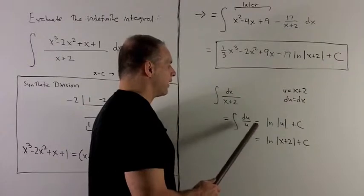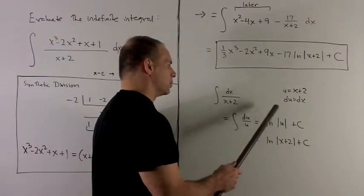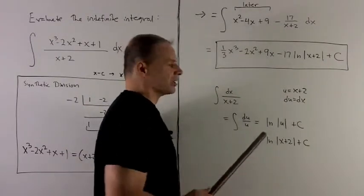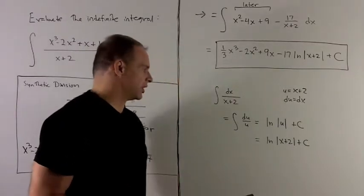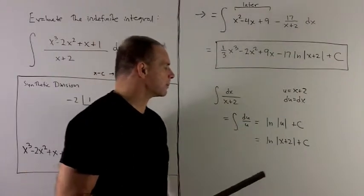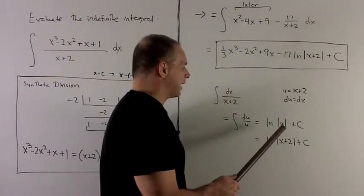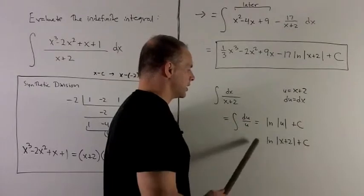When I take the antiderivative, I get natural log of absolute value of u plus a constant. Don't forget your absolute value of u. Depends on how persnickety your professor is. I substitute back in for x plus 2, and that gives me this.